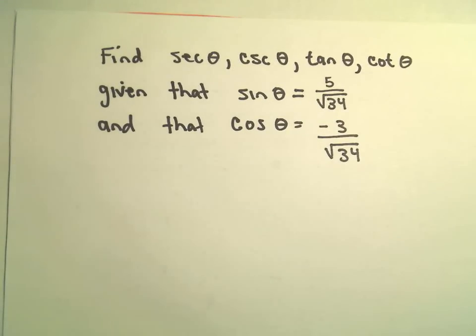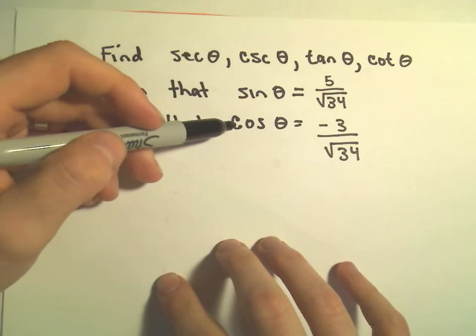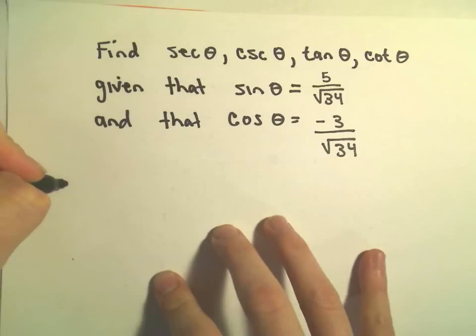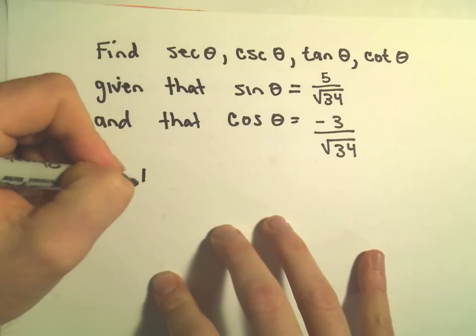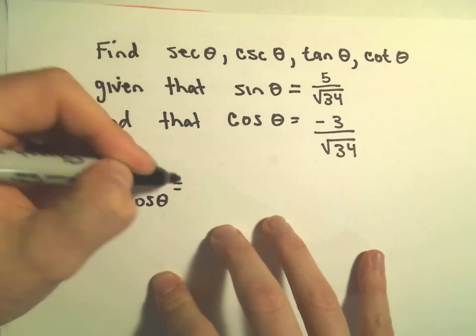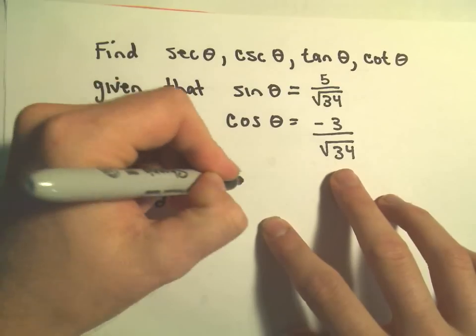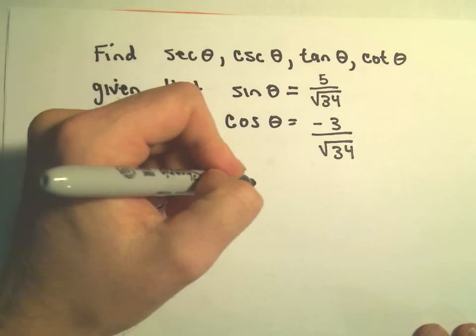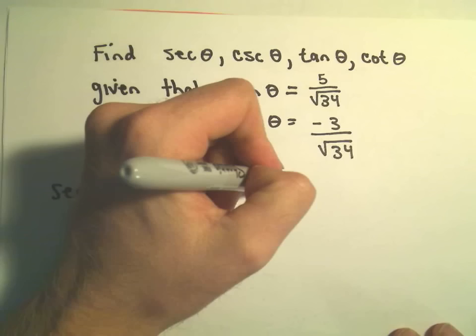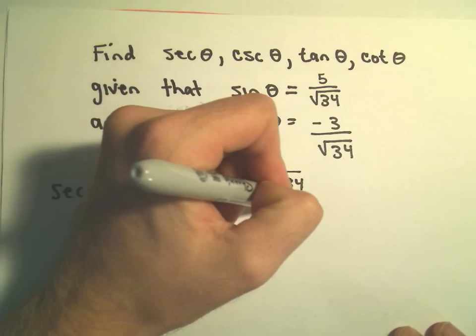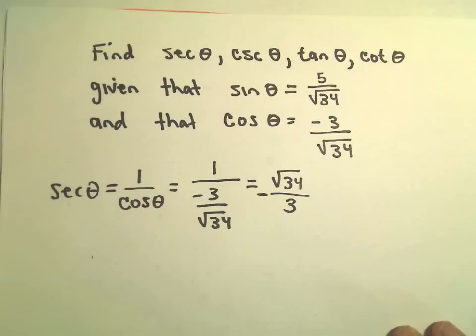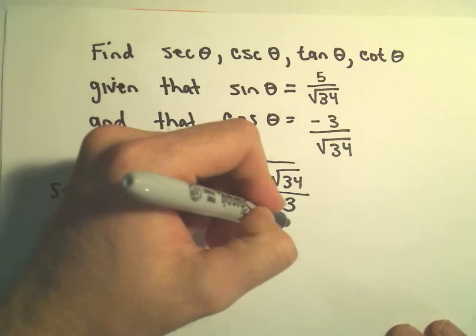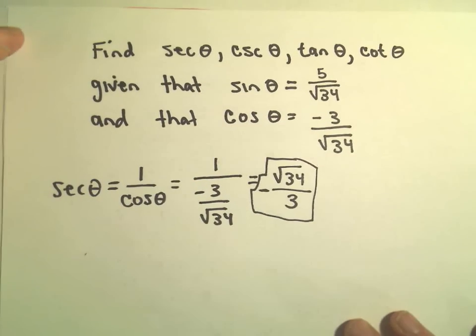These are nice because if you know sine and cosine, you really know everything else. Secant of θ is just 1 over cosine of θ. If we know cosine of θ, we'll just take 1 over that value. If you take 1 over a fraction, that simply has the effect of flipping the fraction in the denominator. We can put the negative out front. So secant of θ, all we do is flip the fraction, and secant of θ will be -√34/3.